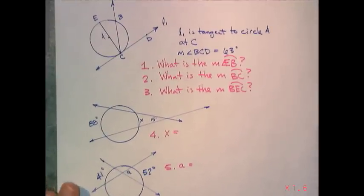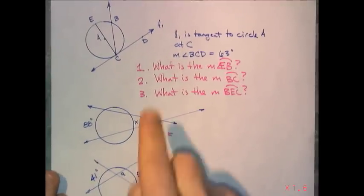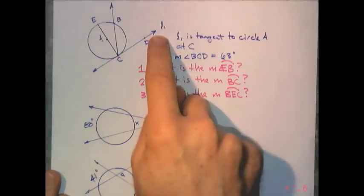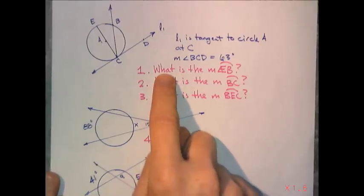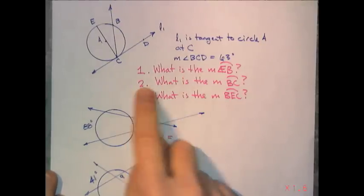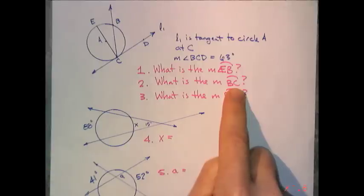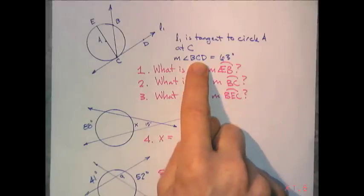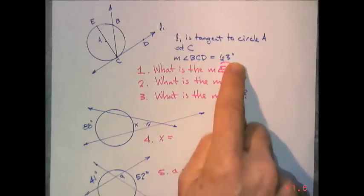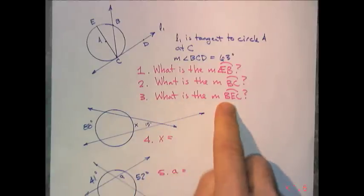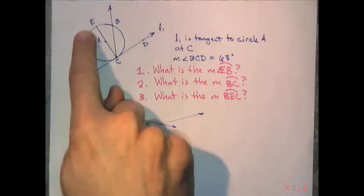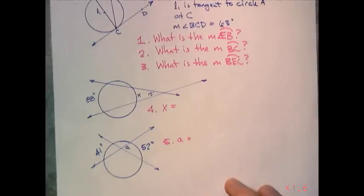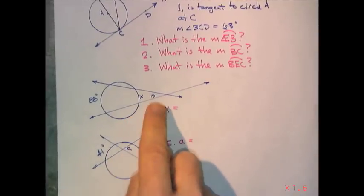What you need to do is I have three problems right here. Problem number one: you're given a tangent and a secant, there's a diameter, this is circle A. The problem is asking: what is the measure of EB? Number two: what is the measure of arc BC? I've also given you that measure of BCD, that's 63 degrees. Number three: what is the measure of BEC? BEC is the major arc.